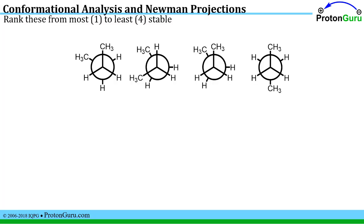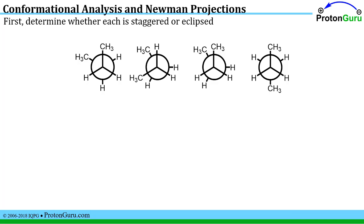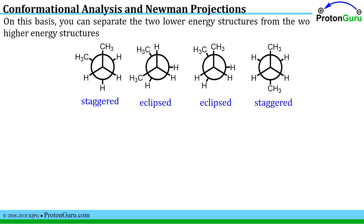Our first problem is a pretty standard one for Organic Chemistry exams. It's asking us to rank different Newman projection conformers from the most stable, number one, to the least stable, number four. The very first thing you want to do is figure out which of these are staggered conformations and which are eclipsed. The staggered ones have a relatively good amount of space between the substituents, whereas the eclipsed ones are really pushing these two groups right up on top of each other. The eclipsed conformers will always be higher in energy than the staggered in these standard linear alkane cases.